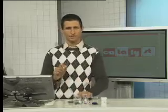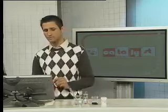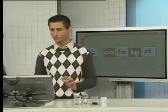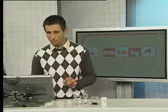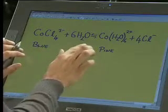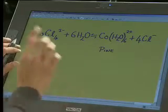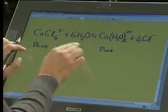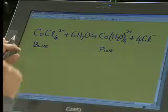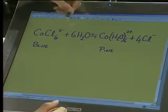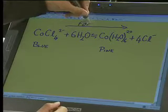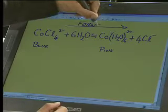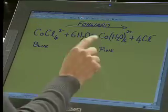Let's look at the reaction on the board and understand exactly why we went from blue to pink. We took a blue solution, added H₂O, and the solution became pink. This means water favoured the reaction going from left to right — that's called the forward reaction. I added H₂O and we saw it going pink, so we've got evidence that it turned from blue into pink.